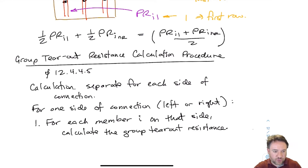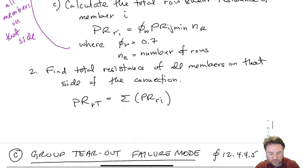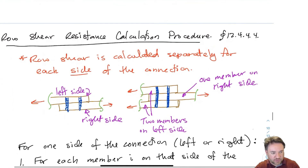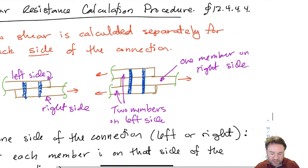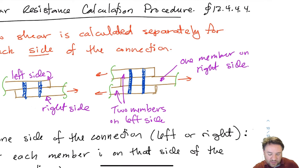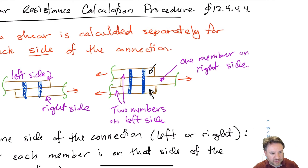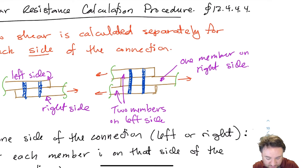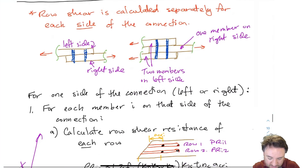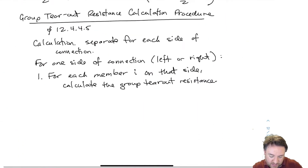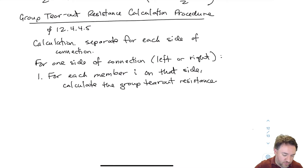To remind ourselves of the setup: if I have a three-member connection with two members on the left side and one on the right, I find group tear out for each left-side member and add those together to get the total group tear out resistance for that side. That's the approach. So for each member I calculate group tear out resistance using this equation.